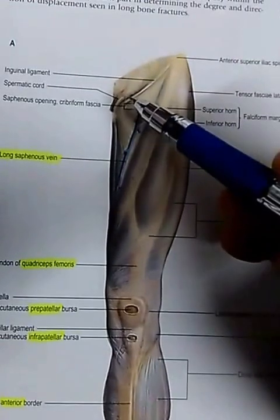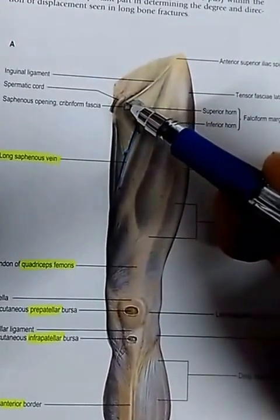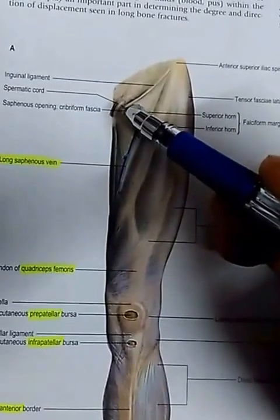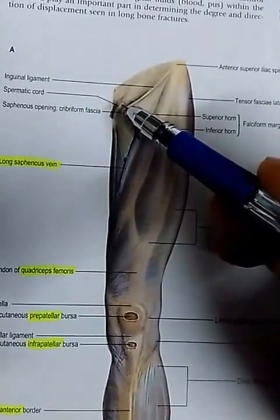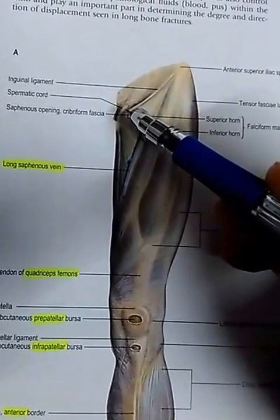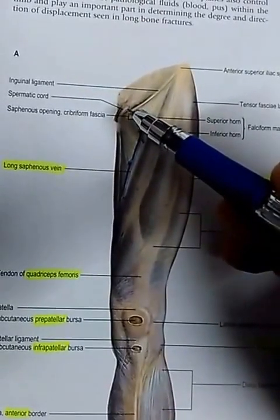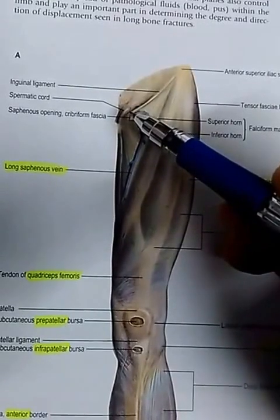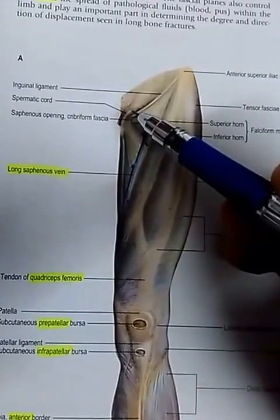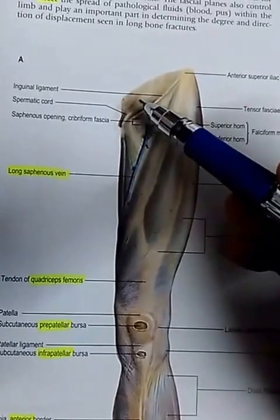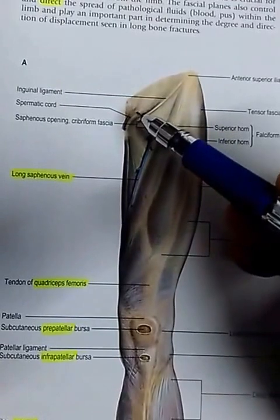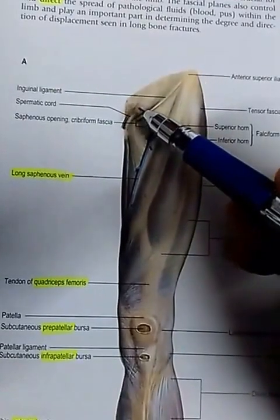Just above the inguinal ligament at its medial end, the spermatic cord is coming out. The spermatic cord in males and the round ligament of uterus in females, along with the ilio-inguinal nerve, come out through the superficial inguinal ring, which is an exit point of the inguinal canal.